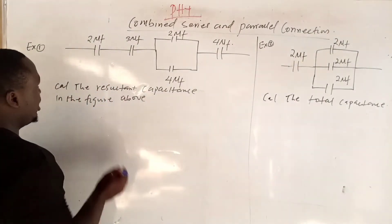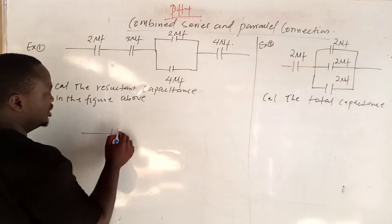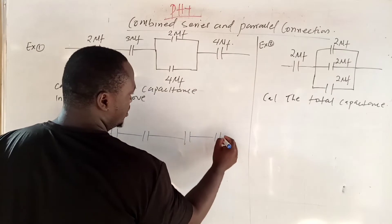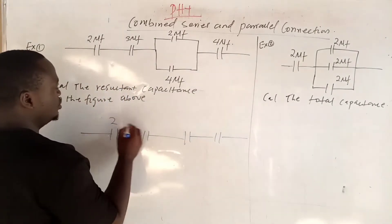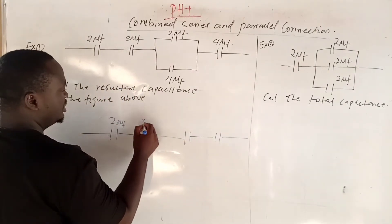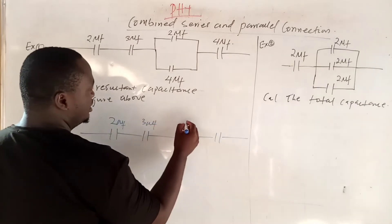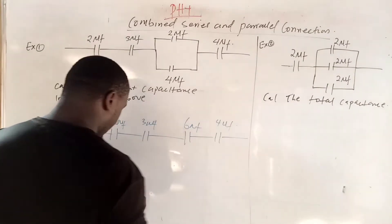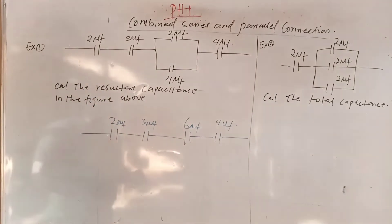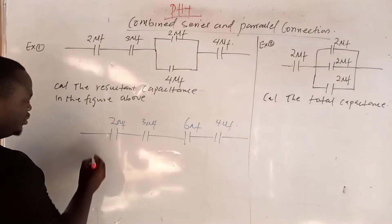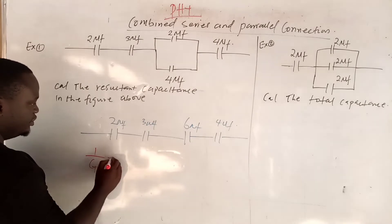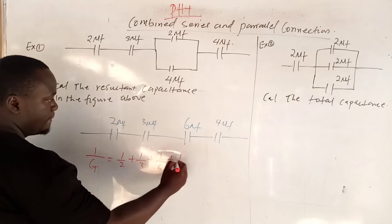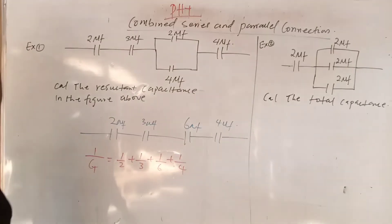By redrawing, the combined capacitor changes. Remember this is 2 microfarad, this is 3 microfarad, this will now be 6 microfarad, and here will be 4 microfarad. So we have four values in the redrawn circuit.